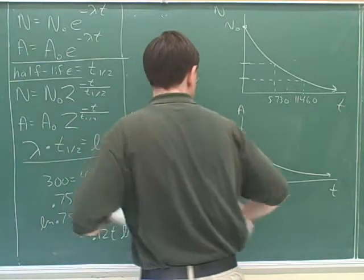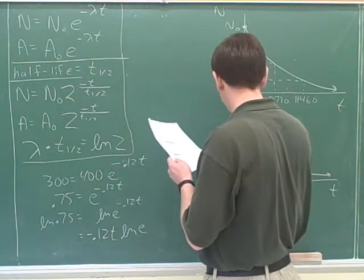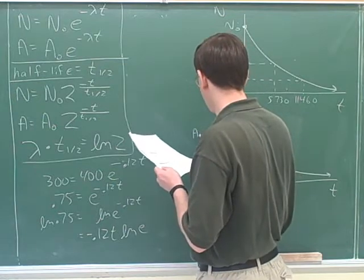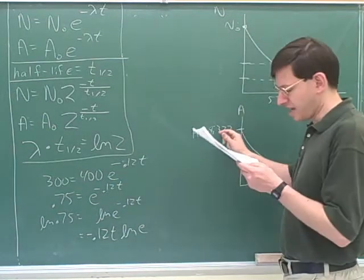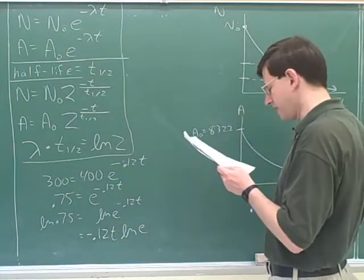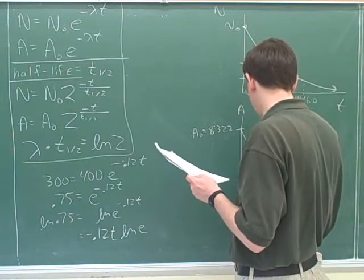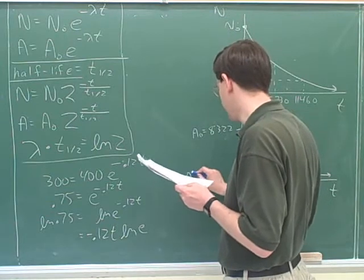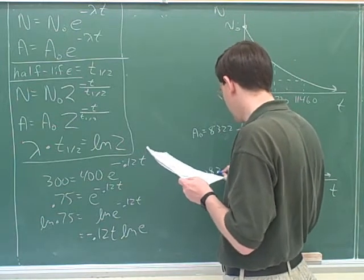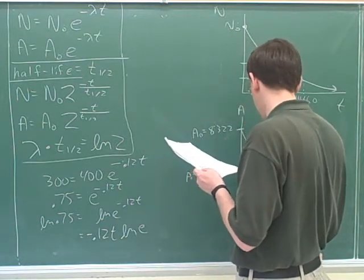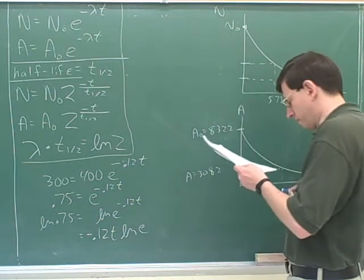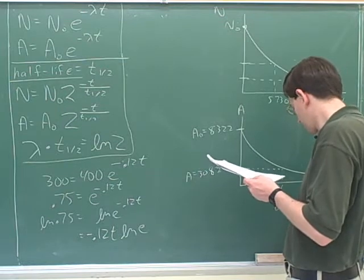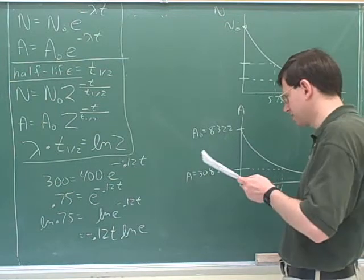So it's always good to use one of these graphs when you're doing a decay problem. The original activity is 8322 decays per minute, and then it falls to 3082, which is maybe around here. That would be A, 3082 decays per minute. And we know that happens over four days.